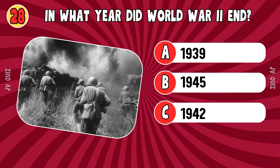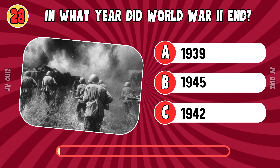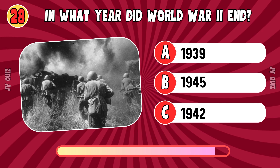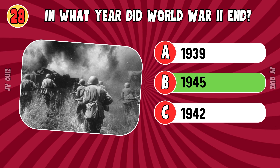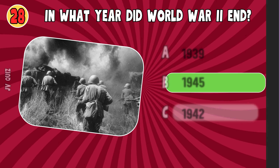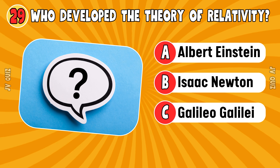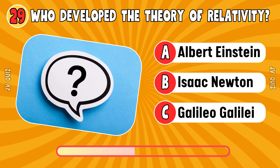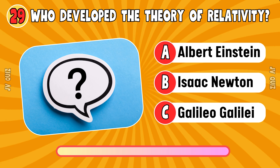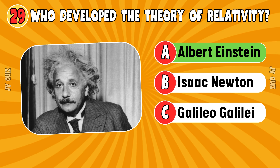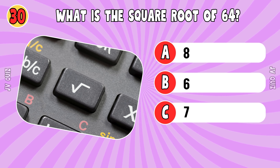In what year did World War II end? 1945. Who developed the theory of relativity? Albert Einstein. What is the square root of 64?